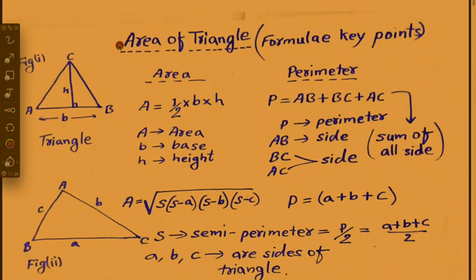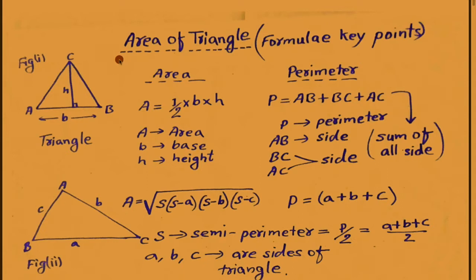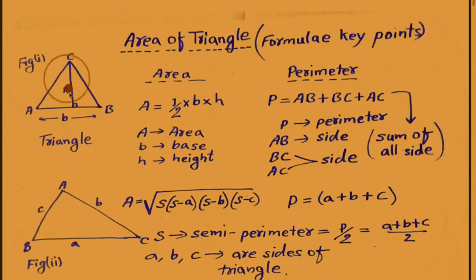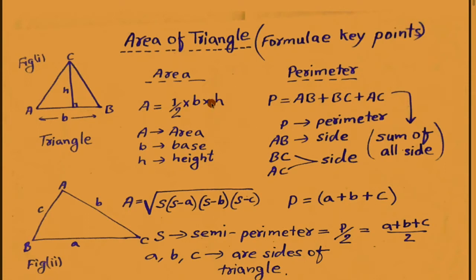We shall find the area of a triangle. From the beginning of the primary level syllabus, we have calculated that the area of a triangle equals half into base into height. In figure number one, ABC is a triangle where height and base are given. If height and base are given, we can easily find the area of the triangle from our formula: A equals half into base into height.